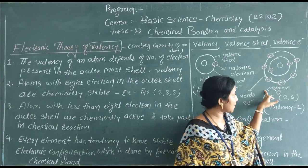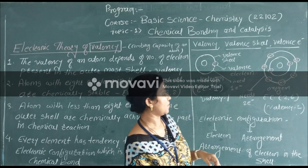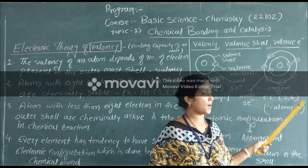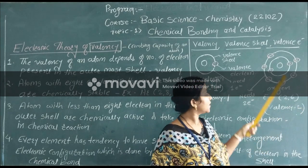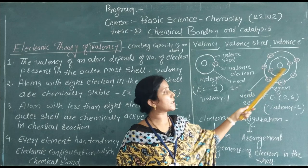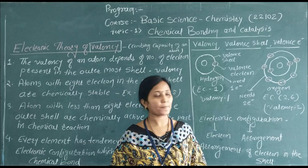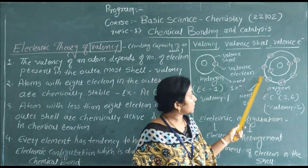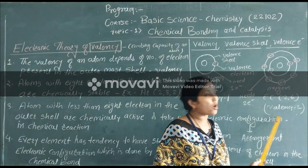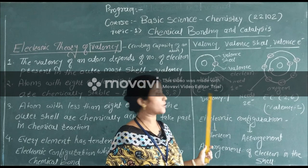Another example is the structure of oxygen. The electronic configuration of oxygen is 2, 6 — meaning the first shell contains two electrons and the last orbit contains six electrons. So the valence of oxygen is two, and the valence of hydrogen is one.